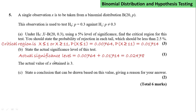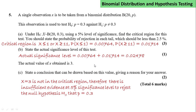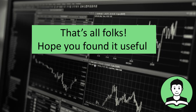If the test statistic turns out to be X = 3, that is not in the critical region. Therefore there is insufficient evidence at the 5% level to reject the null hypothesis that p = 0.3. That's all — I hope you found it useful. Good luck in your examinations.